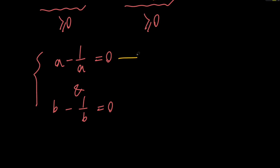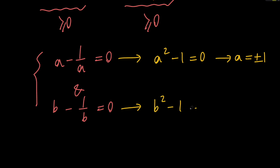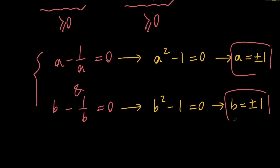Let's solve these for a and b. For the first one, multiply both sides by a to get a squared minus 1 equals 0, which means a squared equals 1, so a equals positive or negative 1. We do the same for b, and we get b equals positive or negative 1. So we have two solutions for a and two solutions for b, giving us a total of four pairs of solutions.